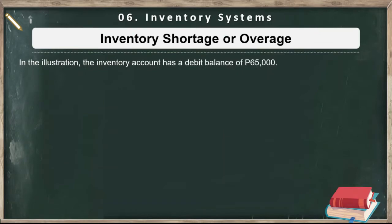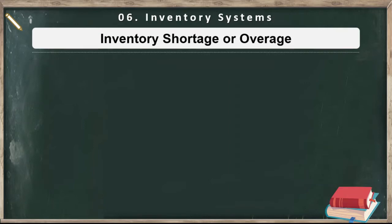Then we have shortage or overage. This will arise when the physical count does not coincide with the records, especially when using the perpetual inventory system. If the records show 65,000, what if the physical count doesn't match? What if the physical count is lesser or greater than the records? So you count what's physically on hand to determine what's remaining.